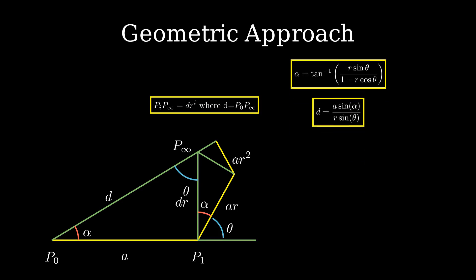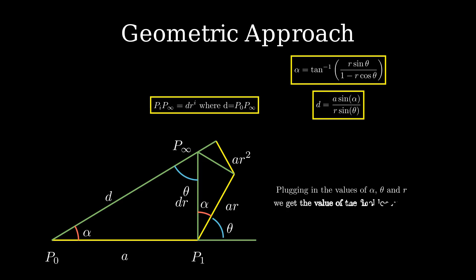Now, we have alpha in terms of theta and R, which are known, and D in terms of alpha, theta, and R, which are also known, and A which is known. So, plugging in the values of A, theta, and R, we get the value of the final location to be 11.55 meters from the starting point at an angle of 30 degrees left of north.